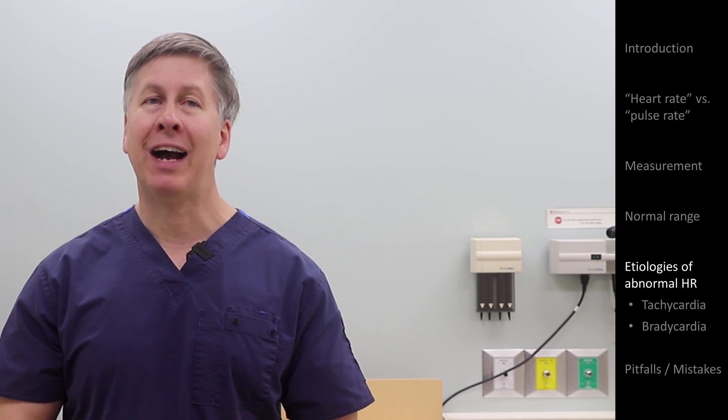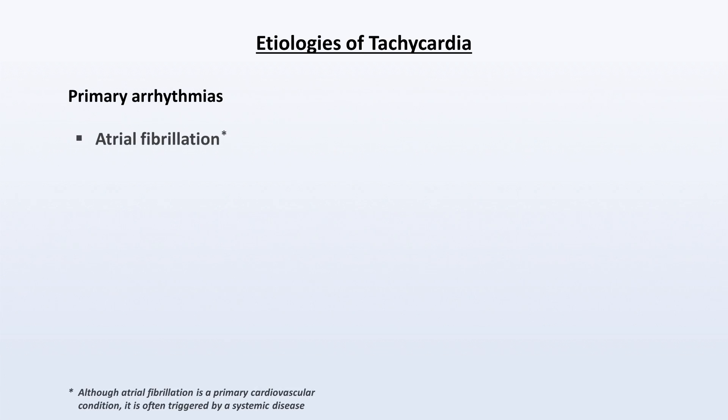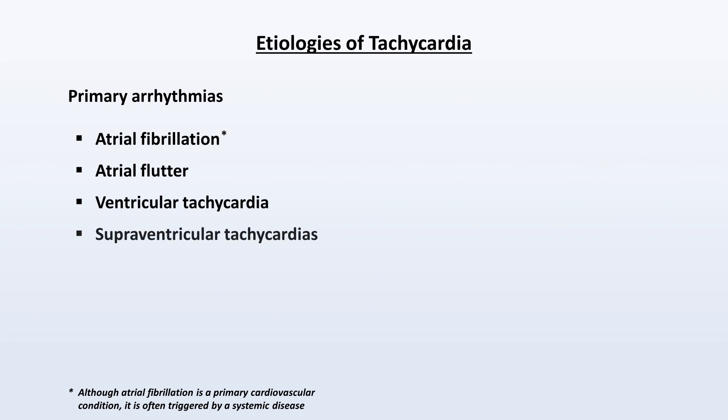There are multiple frameworks for categorizing the etiologies and mechanisms of tachycardias, but the simplest divides them into two: primary arrhythmias and systemic diseases. Primary arrhythmias include the previously mentioned atrial fibrillation, as well as atrial flutter, ventricular tachycardia, and a large number of others with increasingly complex names.